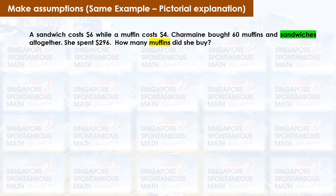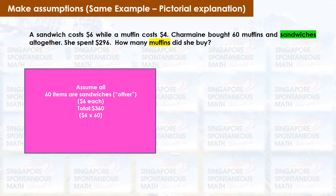The diagram provides a visual representation of the assumption method. Assuming Charmaine bought 60 sandwiches, which is the costlier item, she would have spent $360 instead of $296.